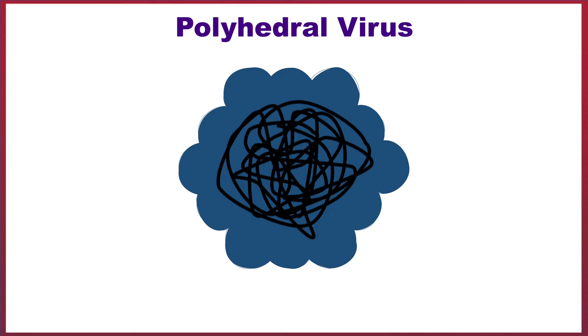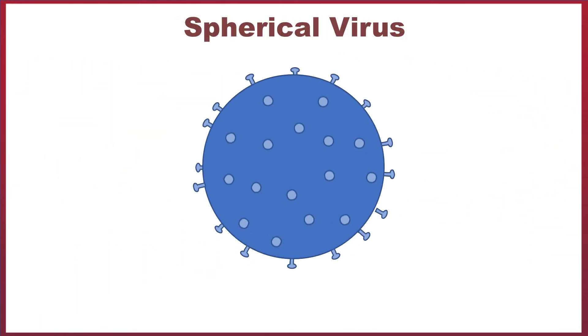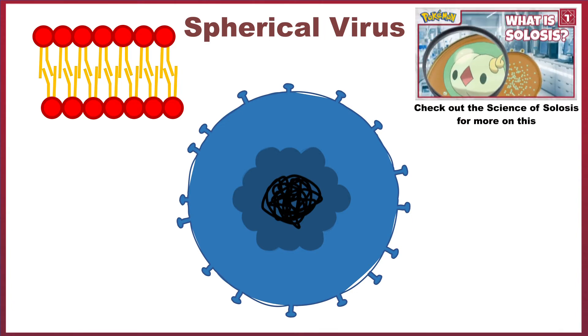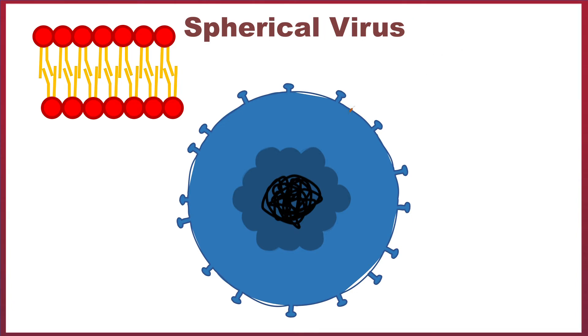Following polyhedral viruses, we then have spherical viruses, which include most coronaviruses. These have a core made up of genetic information like the others, and this is once again surrounded by a polyhedral capsid. Enclosing this capsid is a phospholipid bilayer, like those found in most cell membranes. And this is coated in many surface proteins and glycoproteins, which are used for recognition by the cells it tries to infect.